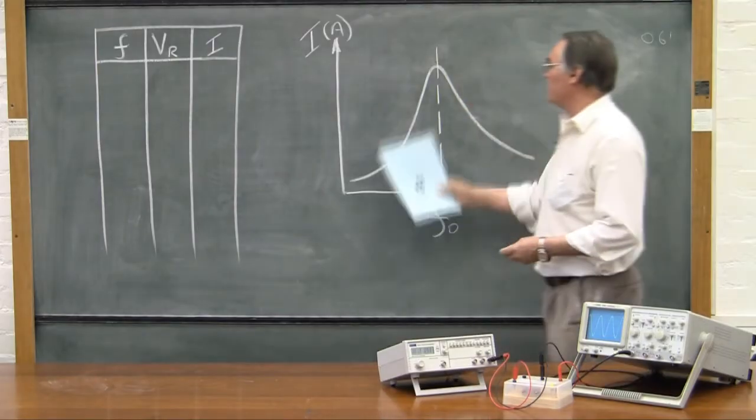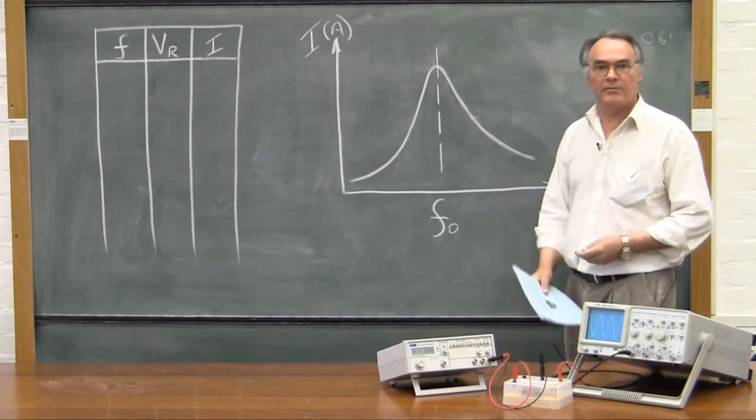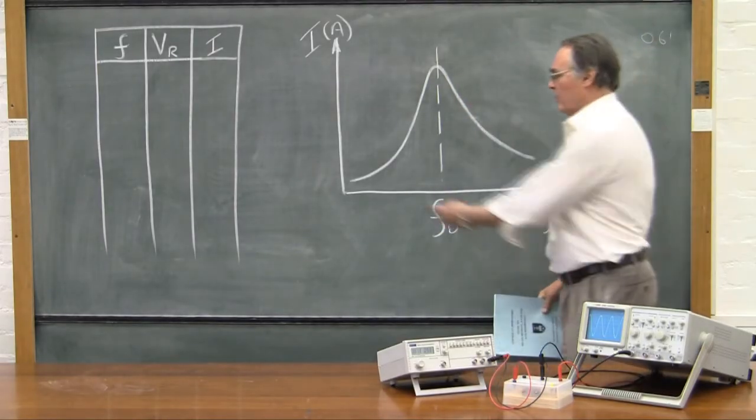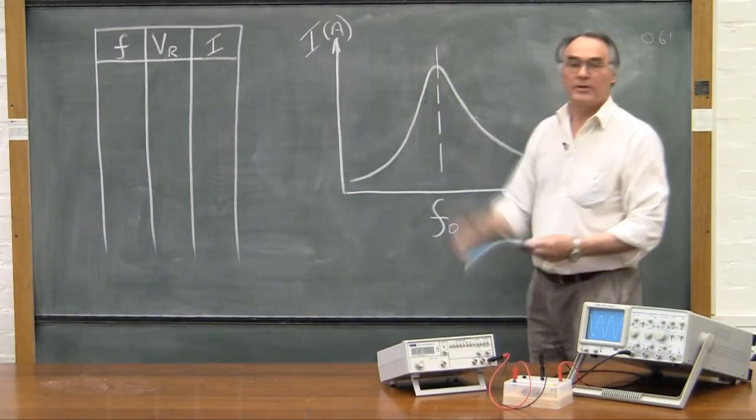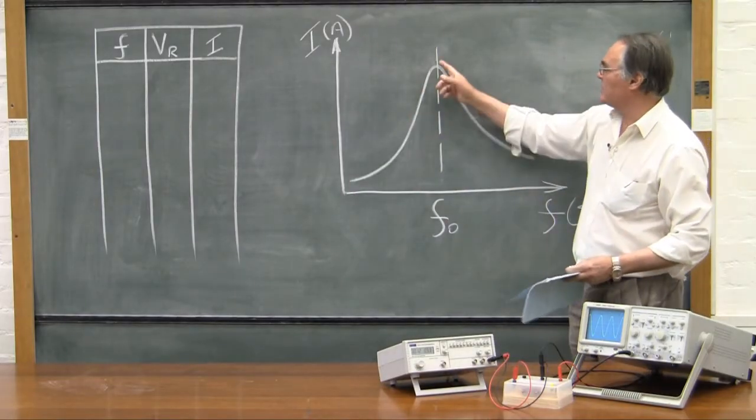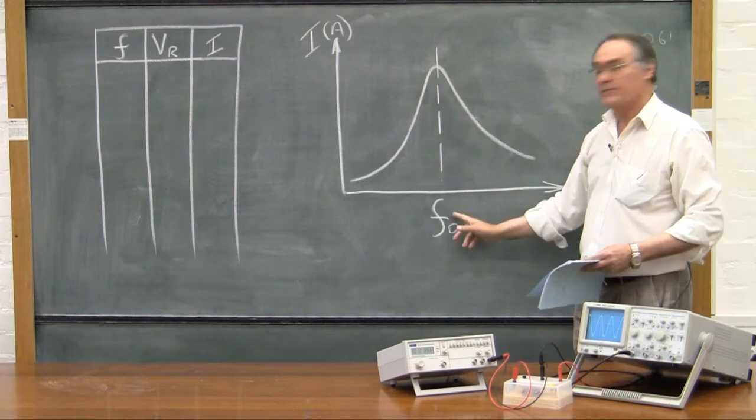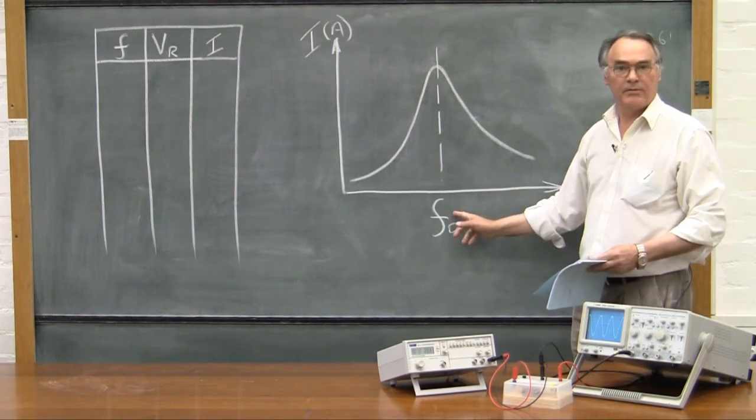The next step is that you would have plotted the graph and the graph would look something like this, where you'd have frequency with current in the circuit, and of course this peak value gives you the value of the resonant frequency over there.